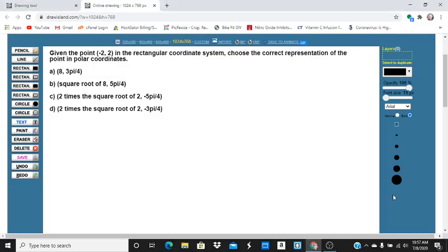Hi, Mr. Uncred here, and we're looking at this problem. It's a problem a friend asked me about as he was studying for the Praxis. So the problem is, given the point (-2, 2) in the regular coordinate system, choose the correct representation of the point in polar coordinates.